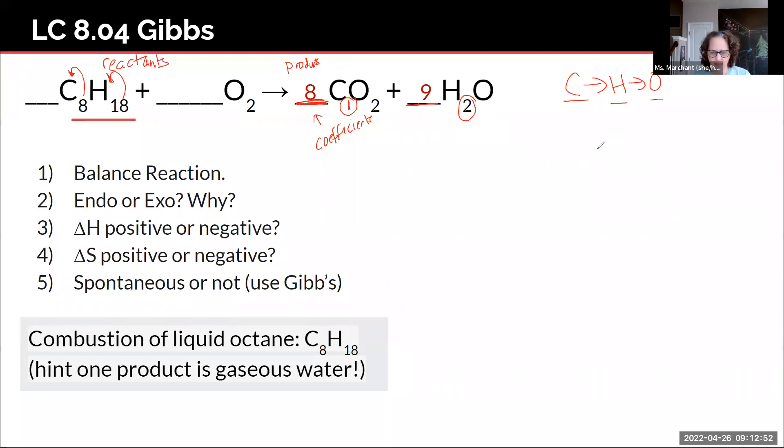Finally, we balance the oxygens and it's because he's a player that we have to balance him last because he shows up both in carbon dioxide and water. Eight times the two oxygens in carbon dioxide is 16. Nine times the one oxygen. Remember if there's no number, it's a one is nine oxygens in water. So altogether there are 25 oxygens. So we need 25 on the left. What times two is 25? 12.5 times two.